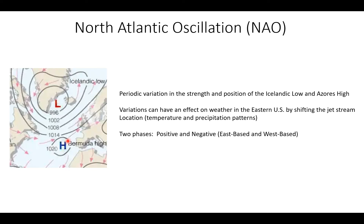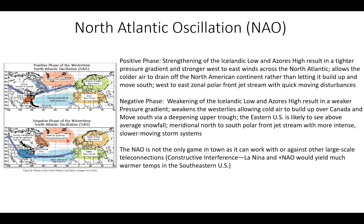With the negative phase, as I mentioned in my last video, there is an east-based as well as a west-based negative NAO. Continuing our discussion of the NAO phases as a review: the positive phase features a strengthening of the Icelandic low and the Azores or Bermuda High pressure system. That results in a tighter pressure gradient, tighter packing of the isobars, and a stronger west-to-east wind flow across the North Atlantic.